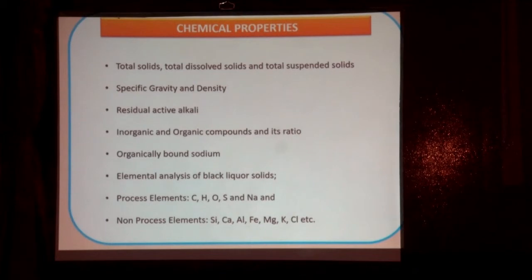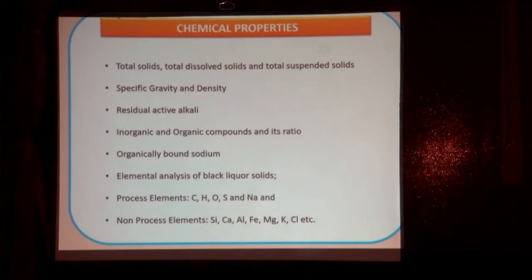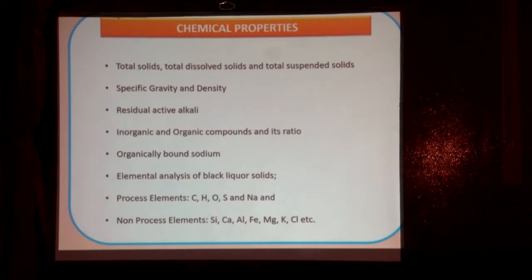Black liquor properties can be divided mainly into three areas: chemical properties, physical and radiological properties, and thermal behavior. Chemical properties mainly involve total solids, TDS, TSS, specific gravity and density, residual alkali (RA) — though many mills use a shortcut method that gives incorrect RA values — inorganic and organic compounds and their ratio, organically bound sodium, and elemental analysis of black liquor solids including process elements (C, H, O, S, sodium) and non-processing elements (silica, calcium, aluminum, iron, magnesium, potassium).